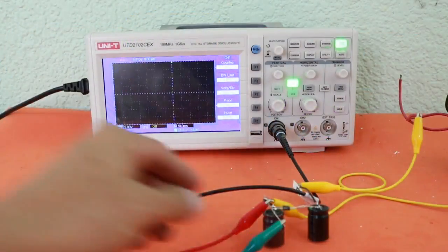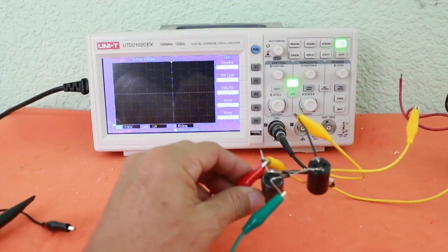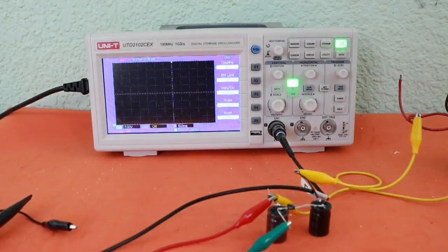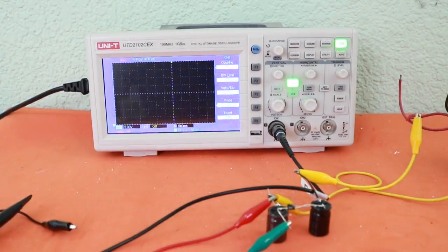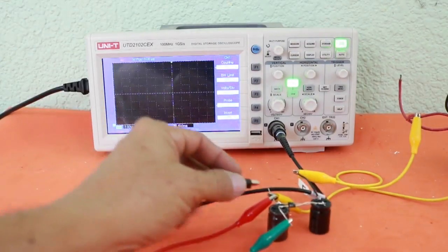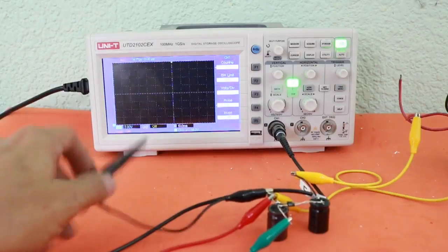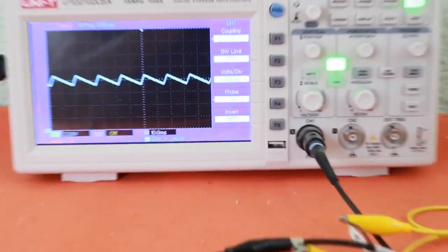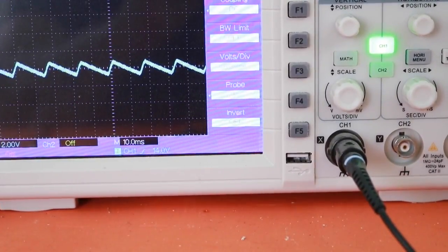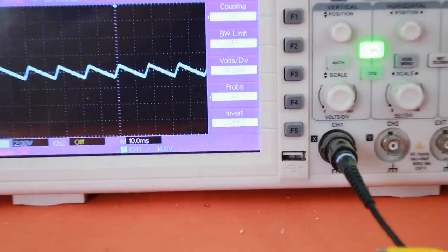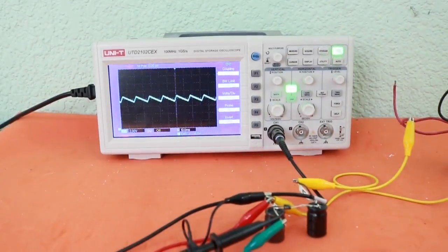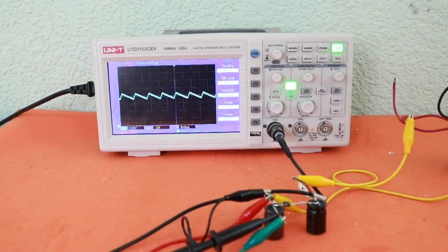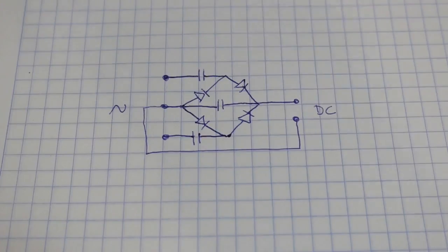So this voltage doubler is very simple and works. However, it has the disadvantage that it only rectifies half wave, as we will see now in the oscilloscope. You can see the waveform is only half wave rectification. But we can add just two more diodes and capacitors and obtain a voltage doubler with full wave rectification.